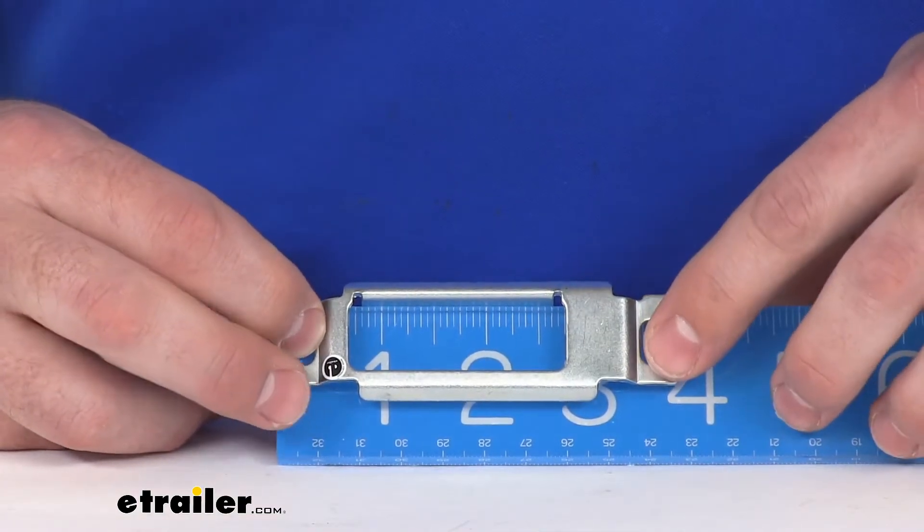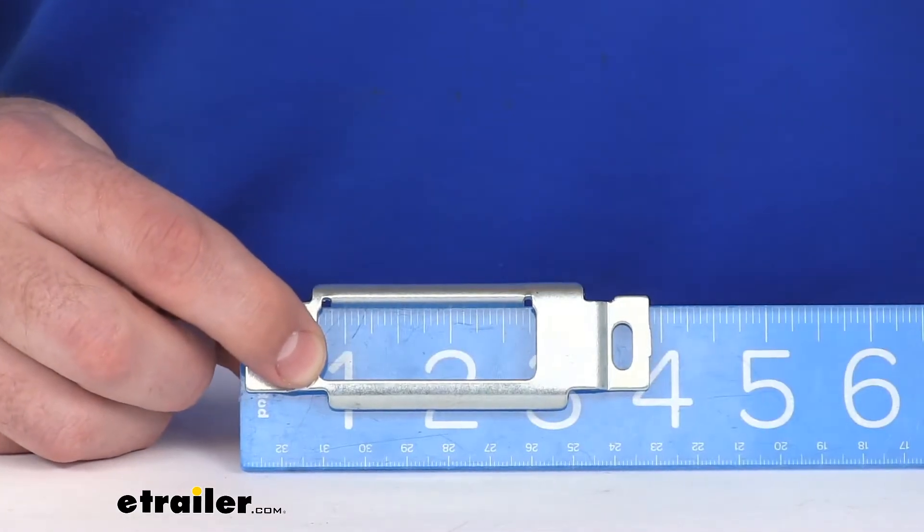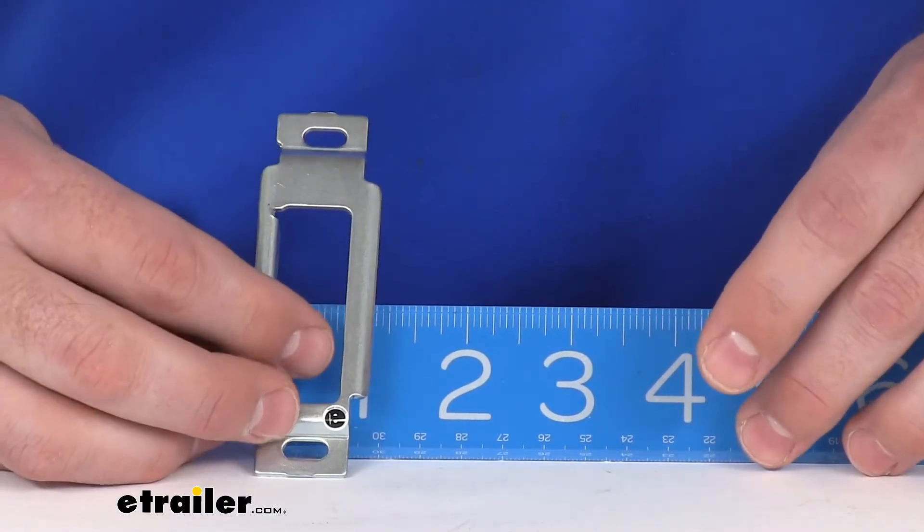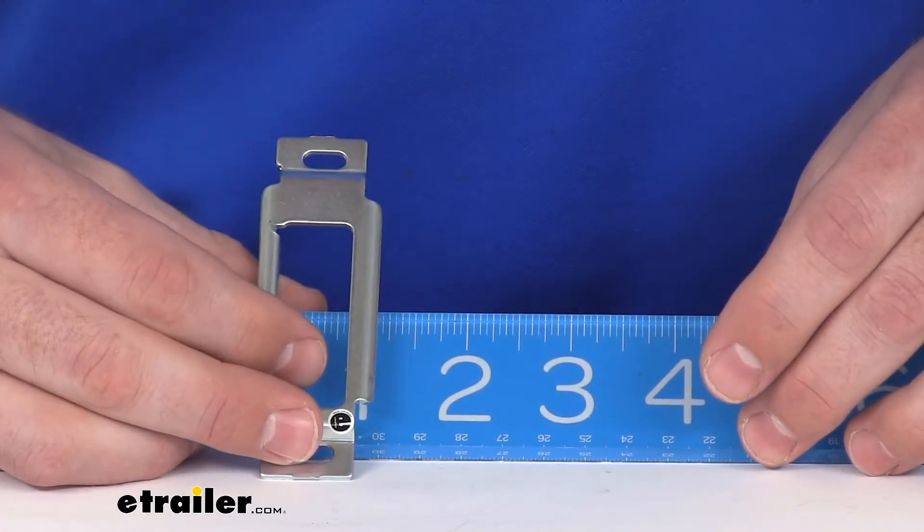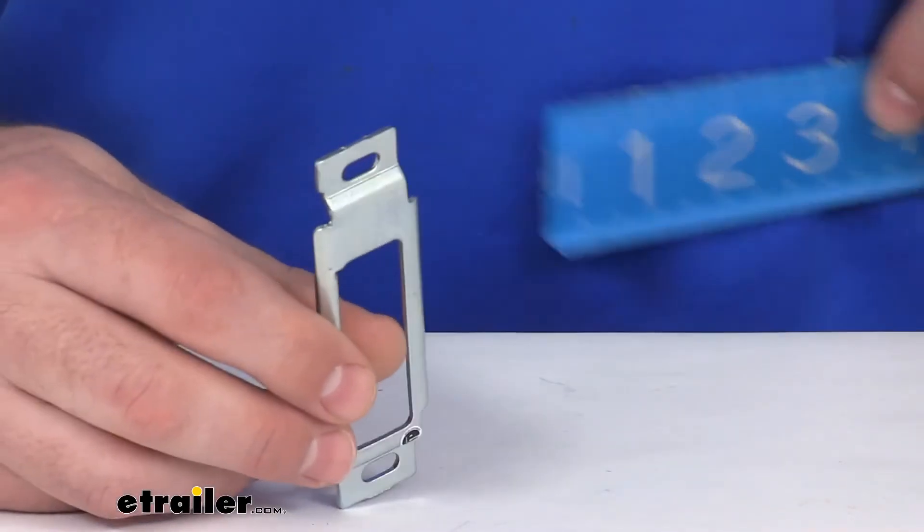When I measure it, I'm measuring right about three and seven eighths of an inch in length and then our width looking about one and one eighth of an inch wide.